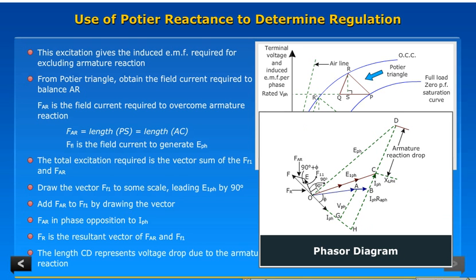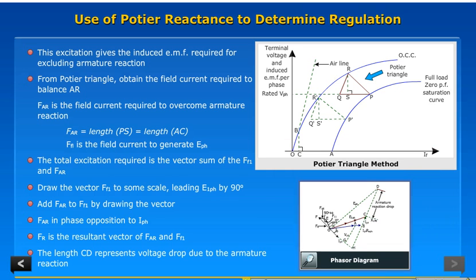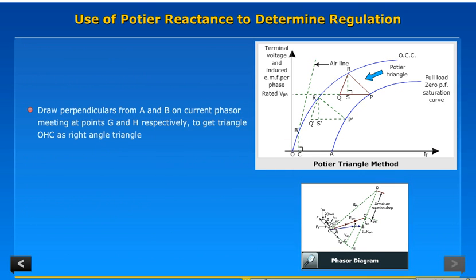The length CD represents voltage drop due to the armature reaction. Draw perpendiculars from A and B on current phasor meeting at points G and H respectively to get triangle OHC as right angle triangle.